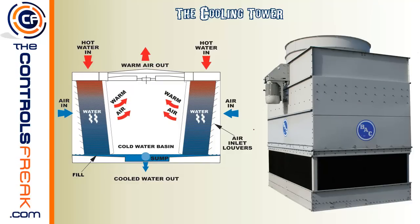A lot of the control strategies that deal with cooling towers involve having multiple towers side by side. You can stage them — tower one, two, and three — calling on additional towers as it gets warmer. Or, with dedicated towers, you run one tower per chiller: one chiller, one tower; two chillers, two towers. Another variation is having one tower with multiple fans — for example, two fans on a single cooling tower cell.